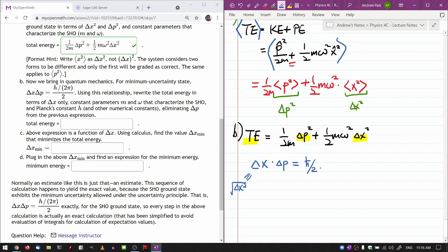So since I want to express the total energy in terms of delta x only, I think what I want to do is solve this for delta p. Then it's h bar over two times uncertainty in position. So plugging it in here, I get my total energy is equal to one over two m...